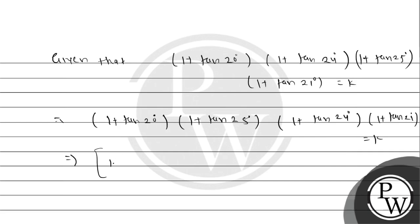So multiply: (1 + tan 20°)(1 + tan 25°) and (1 + tan 24°)(1 + tan 21°) which is equal to k.